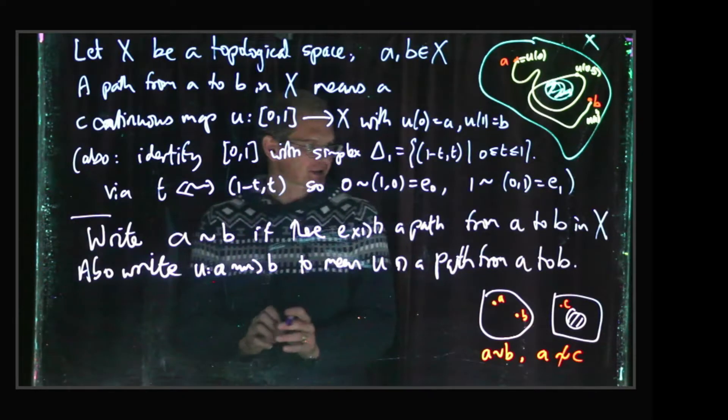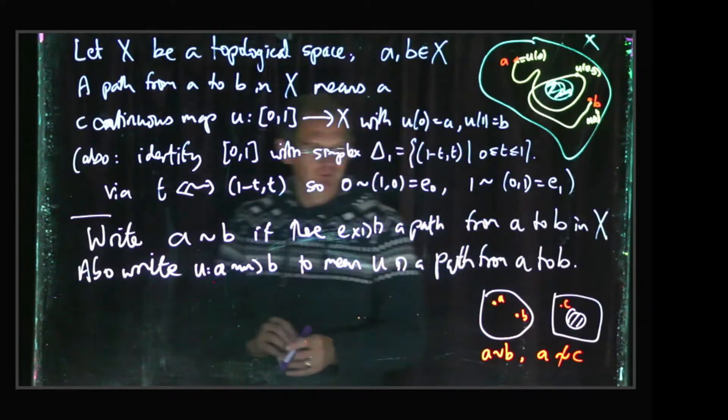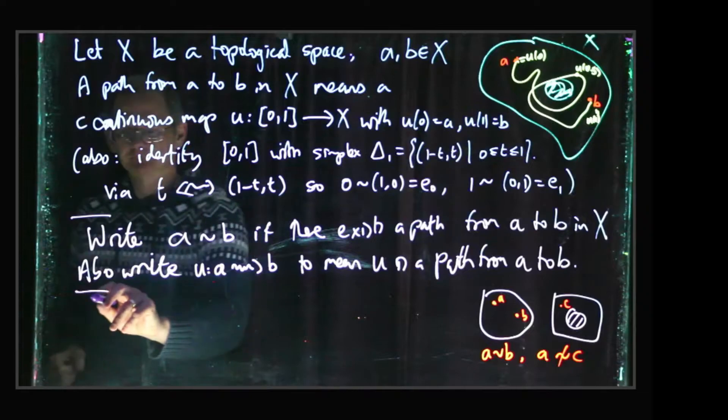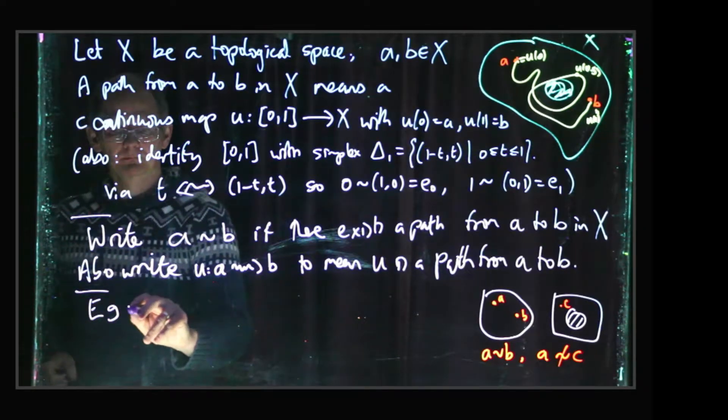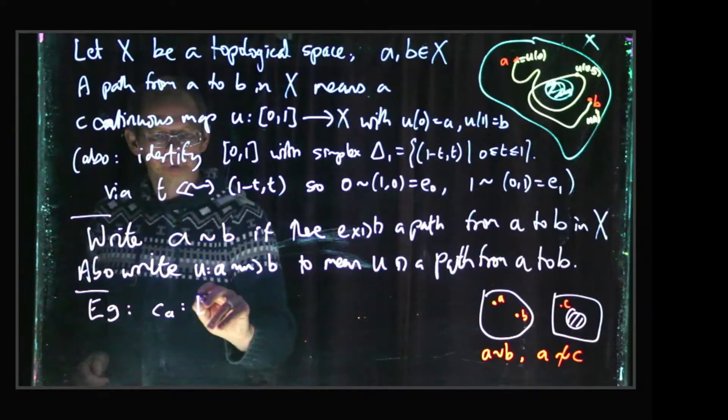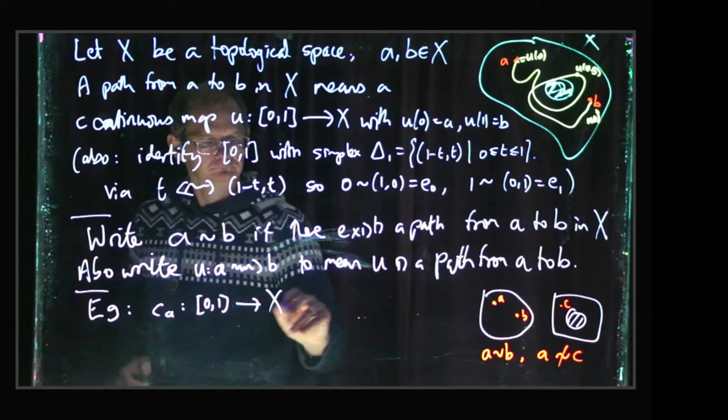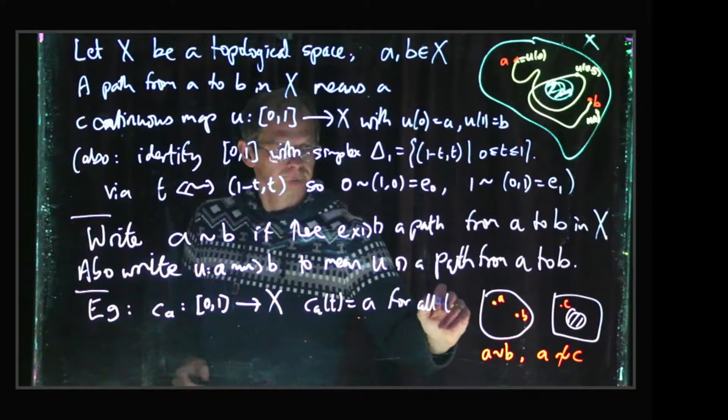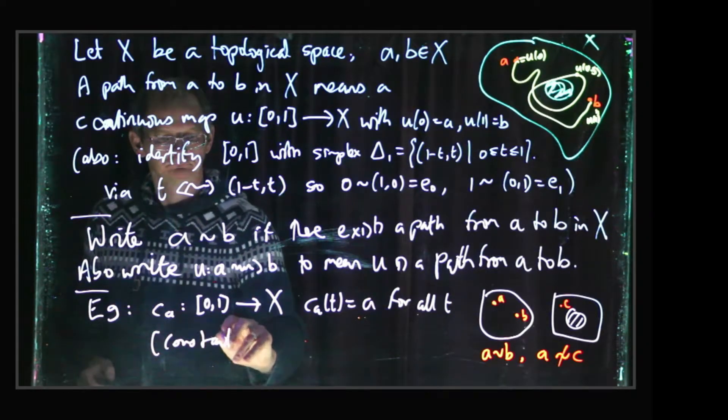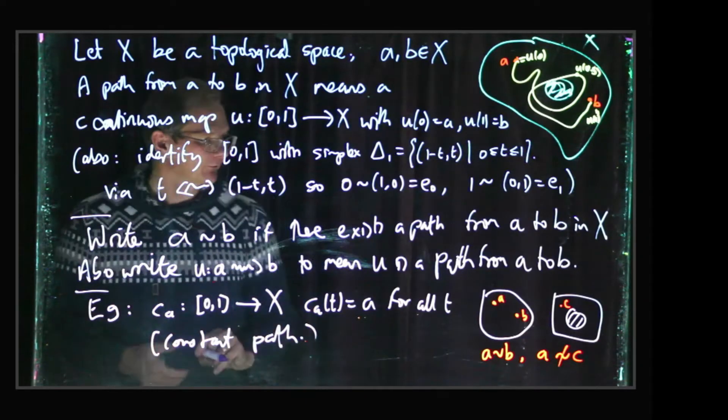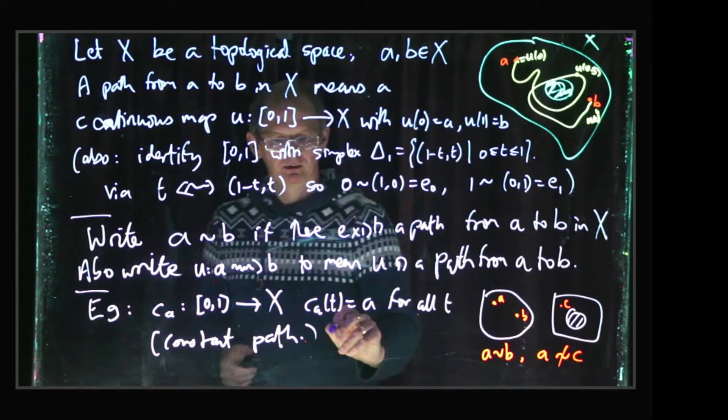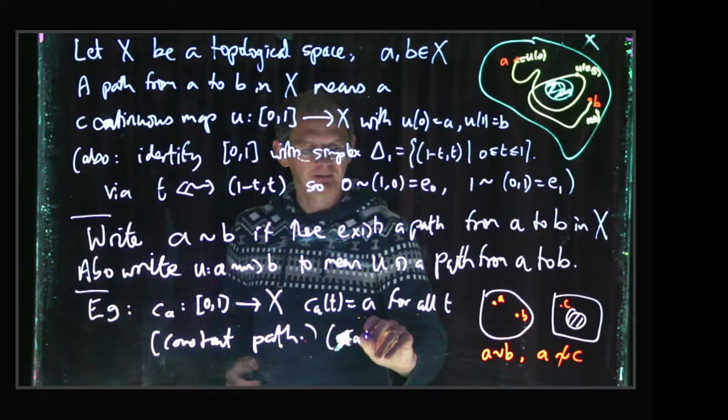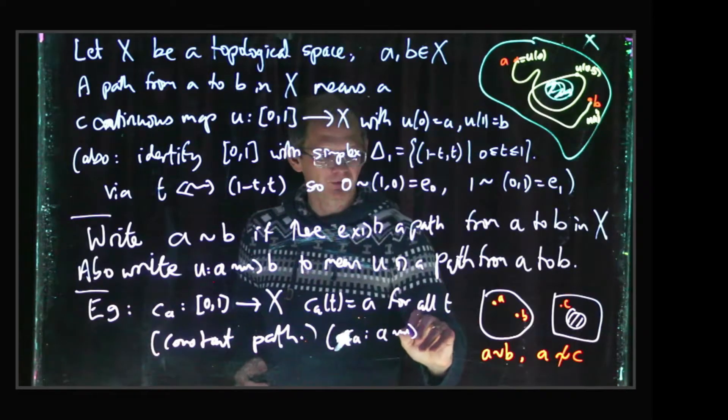So we're going to want to prove that this is actually an equivalence relation, and to prove this is an equivalence relation, we're going to need some constructions with paths. So one very basic one, it's just the constant path. Okay, so we've got this constant path which goes... So we've got this notation that we mentioned a second ago, and that's obviously a path from A to itself.